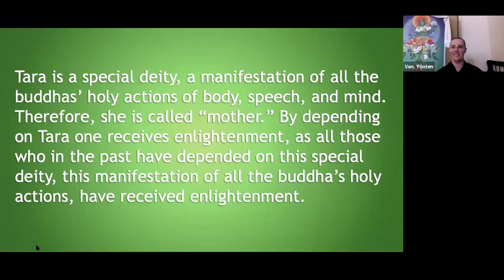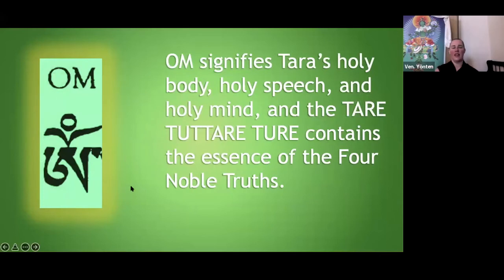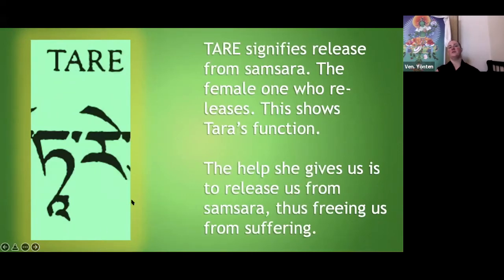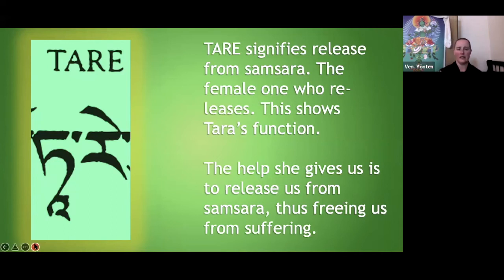Now the mantra. Om always means enlightened body, speech, and mind. In this context, Tara is enlightened holy body, holy speech, and holy mind. Generally, Tare Tu Tare Ture contains the essence of the four noble truths: the truth of suffering, the truth of origin, the truth of cessation, and the truth of path. Tare signifies release from samsara — this determination to be free. The name means the female one who releases. Her function is to release us and help us release ourselves from suffering and fear.